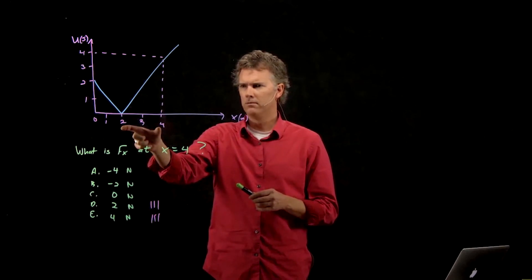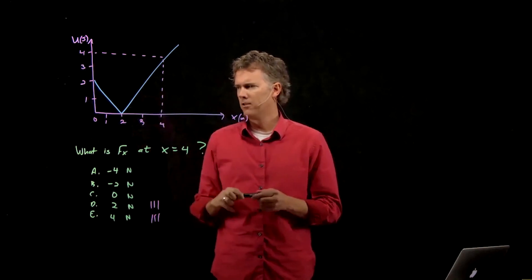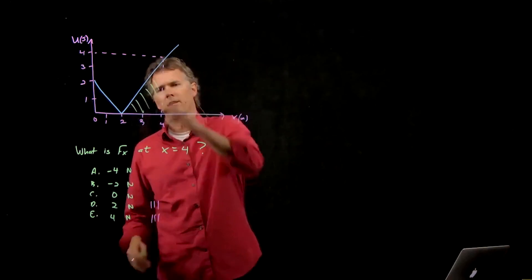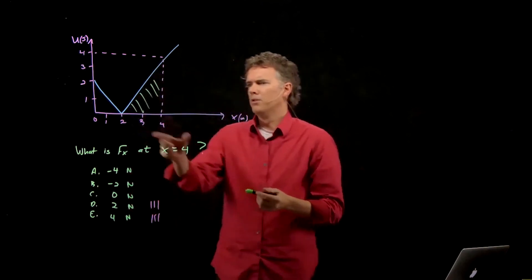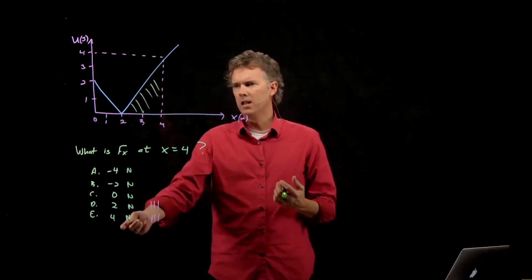So, you thought, what? Something about the area under the curve? Alright, maybe, I don't know. Let's see. What's the area under this curve? It's going to be 2 times 4 and then a half of that, so that would be 4, so you would have said E.